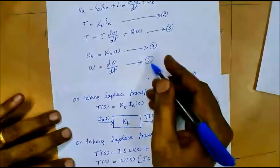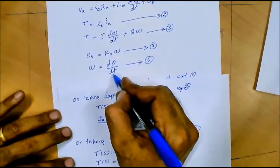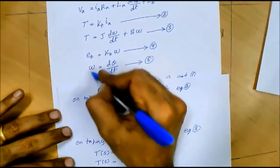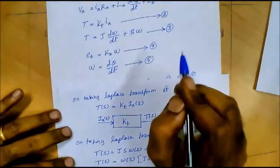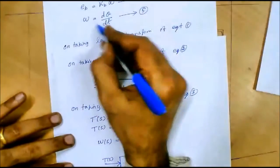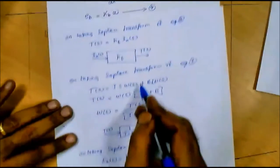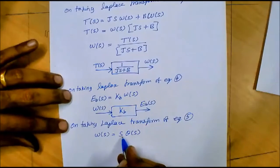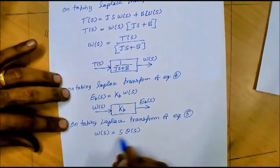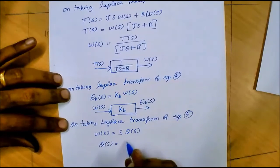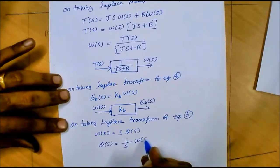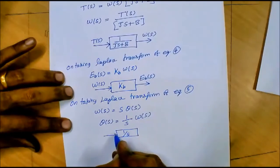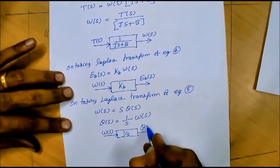Now let us consider equation 5: ω = dθ/dt. Here we take theta as the output and omega as the input from the third equation. Taking the Laplace transform: ω(S) = S·θ(S), so θ(S) = (1/S)·ω(S). The block diagram has ω(S) as input, 1/S inside the block, and θ(S) as output.